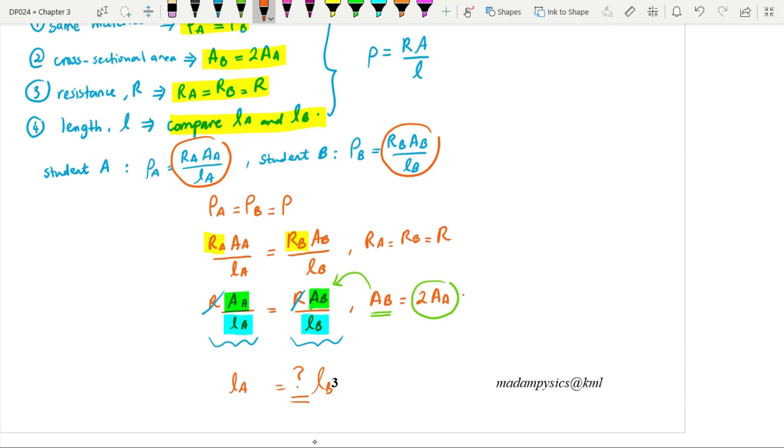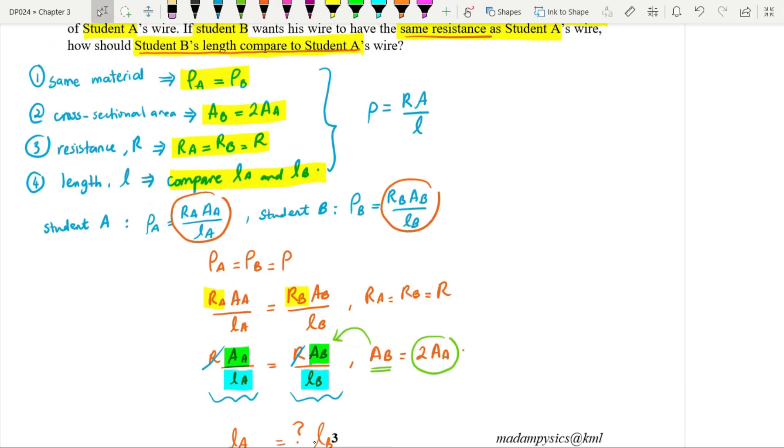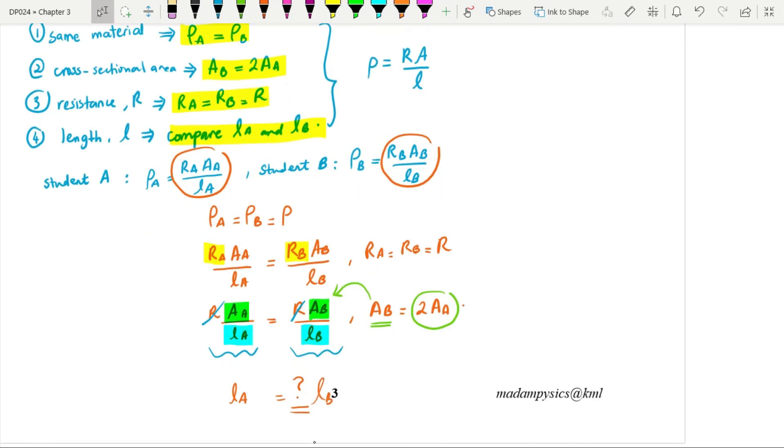Alright, so that will answer the question, comparison between student B length and student A's length. So my solution stops there. So I want you to continue, start from here basically. Substitute area then rearrange equation. Alright, thank you.